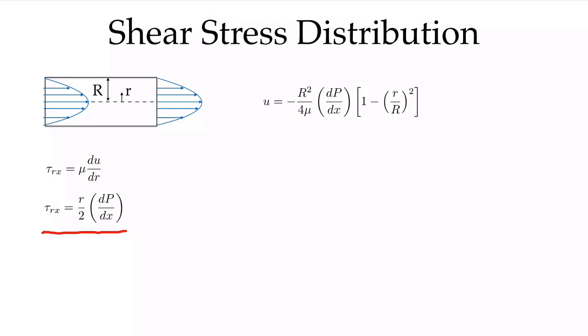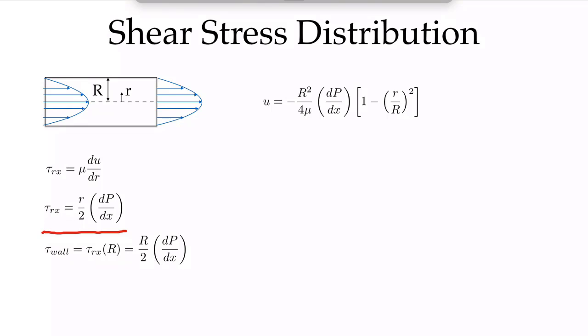Looking at the velocity profile, this centerline plane is an axis of symmetry, and therefore the derivative at that point is equal to 0 — du/dr = 0 at that point. The shear stress increases linearly to a maximum at the wall. We can easily evaluate the wall shear stress: it's simply the value of the shear stress when r equals the pipe radius R, which is R/2 times the pressure gradient dp/dx driving flow through the pipe. And so that's the solution for fully developed laminar flow in a circular pipe.